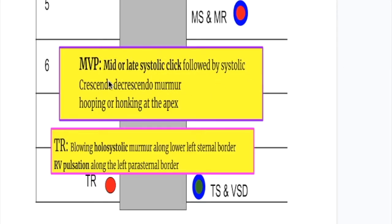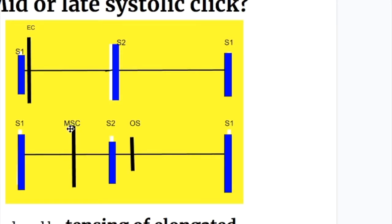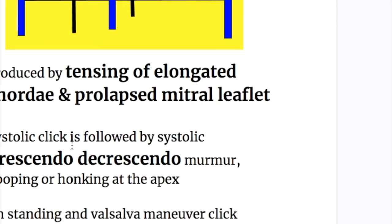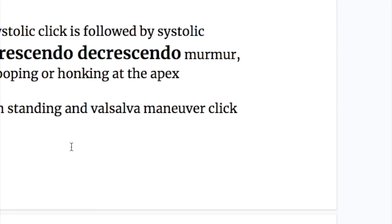The murmur of mitral valve prolapse is also best heard at the apex beat area. The important features of mitral valve prolapse are a mid or late systolic click followed by a systolic crescendo-decrescendo murmur — whooping or honking — at the apex. The mid-systolic click is produced by tensing of elongated chordae and the prolapsed mitral leaflet.